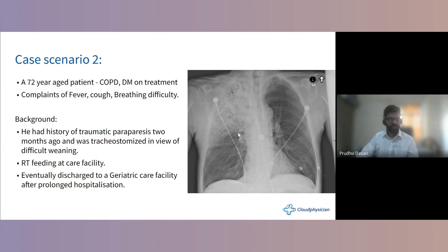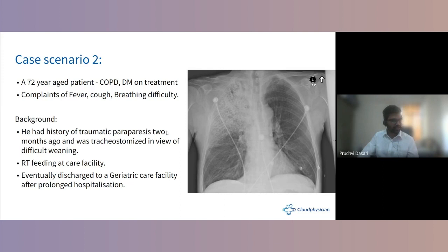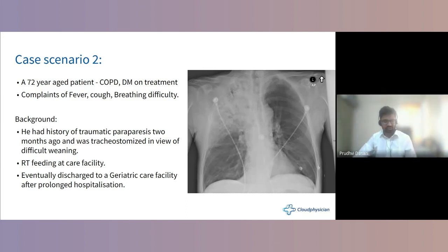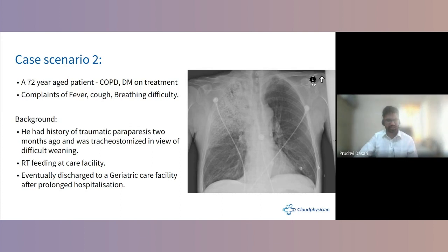A second case scenario: a 72-year-old patient known to have COPD and diabetes on treatment, presenting with fever, cough, and breathing difficulty. He had a history of traumatic paraparesis two months ago, was tracheostomized for difficult weaning, fed through a Ryle's tube in a geriatric care facility. After prolonged hospitalization he was recently discharged, and this current episode is another recurrence.